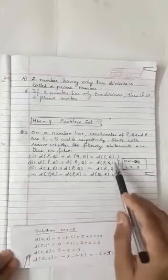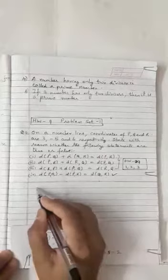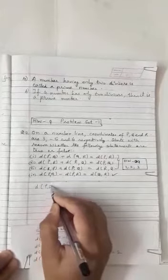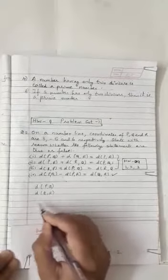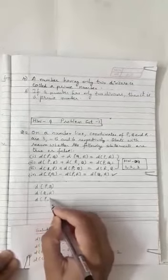Now you can see in all the four statements, we require four distances. That is distance PQ, QR, and we also require distance PR. In all the three cases, we require these three distances.